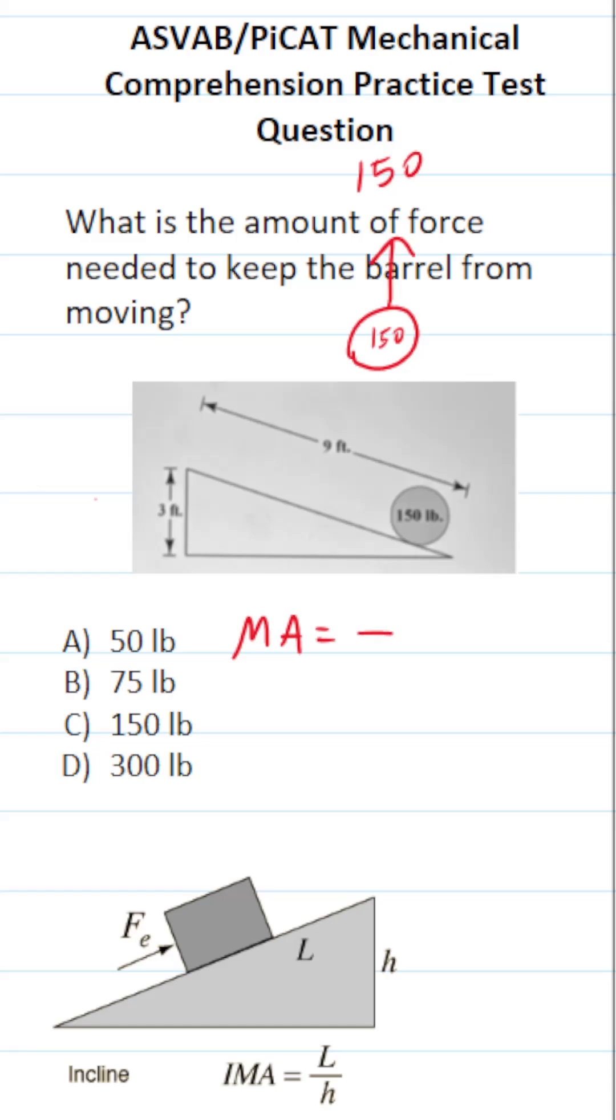How do we calculate the mechanical advantage from using an inclined plane or ramp? It's simply the length of the ramp divided by the height. We can see the length of this ramp is 9, and the height is 3.